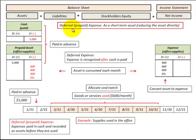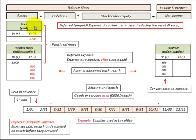In this presentation we're going to look at a deferred prepaid expense. We're going to look at it as a short-term asset where we reduce the asset directly and convert it into an expense. A prepaid asset is an asset on the balance sheet, and we'll look at its effect on cash, which is also an asset on the balance sheet, and its effect on expense, which is part of net income on the income statement.